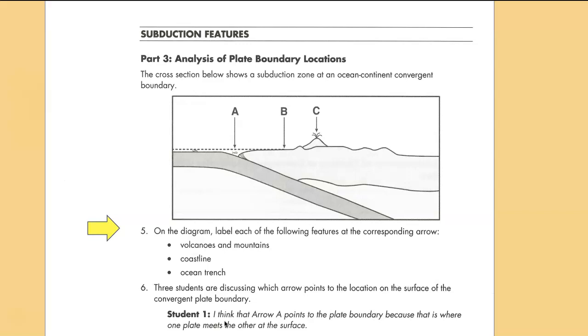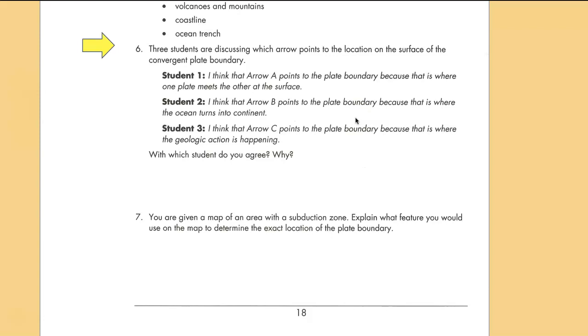On the diagram label each of the following features. So we've got the trench where the two plates contact each other. The coastline where the sea meets the land, which really doesn't mean anything in terms of plate tectonics. And then the volcanic mountains. Three students are discussing which arrow points to the location on the surface of the convergent boundary, and student one is correct. The definition of a plate boundary is where the two plates make contact with each other.